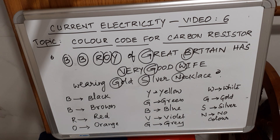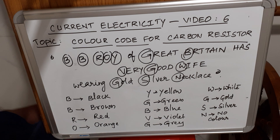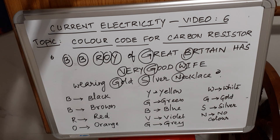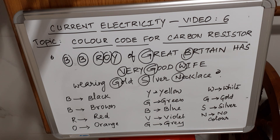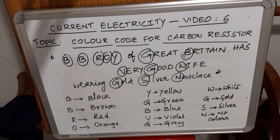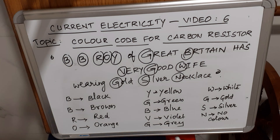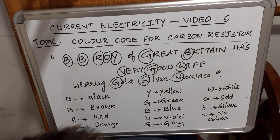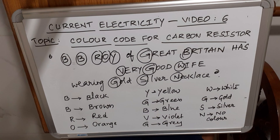The sequence to remember: Black, Brown, Red, Orange, Yellow, Green, Blue, Violet, Gray, White, Gold, Silver, No color. Now we assign numbers to these colors starting from zero: Black=0, Brown=1, Red=2, Orange=3, Yellow=4, Green=5, Blue=6, Violet=7, Gray=8, White=9. Gold = ±5%, Silver = ±10%, No color = ±20%.